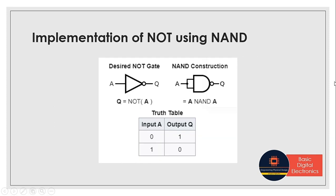Next, we will see the implementation of NOT gate using NAND gate. This is the symbol of a NOT gate. Now we will see how to construct a NOT gate using NAND gate. To construct a NOT gate using NAND gate, we have to join the inputs of a two-input NAND gate. Whenever we join the inputs of a NAND gate, the functionality remains the same as a NOT gate.